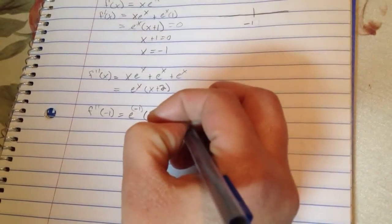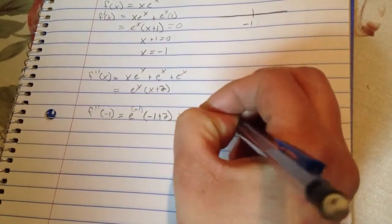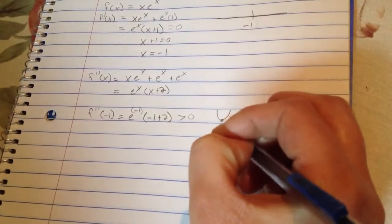So, this entire thing is going to be greater than 0. So, this means that it's concave up. This is our point down here. So, we have a relative min.